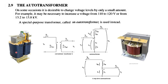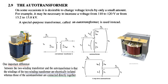A normal transformer has two windings — primary and secondary — while an auto transformer has one winding over the other. One important difference is that in a two-winding transformer the windings are electrically isolated, with no connection between them. In an auto transformer, the primary and secondary are connected directly, so they are not isolated. In situations where isolation is required, we cannot use an auto transformer.